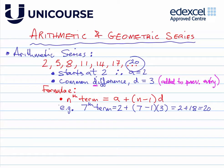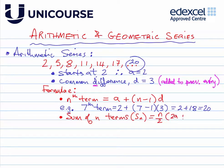Now let's look at the sum of n terms. We write that as S_n, and the formula is n over 2 times (2a plus (n minus 1) lots of d). Let's look at an example — how about the sum of the first four terms.